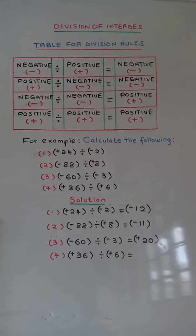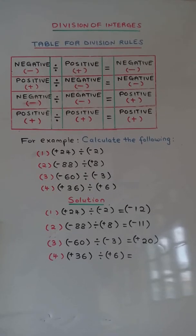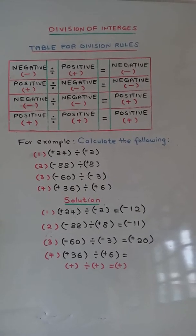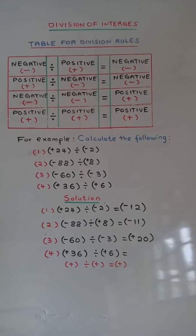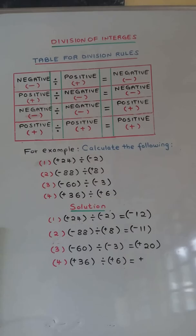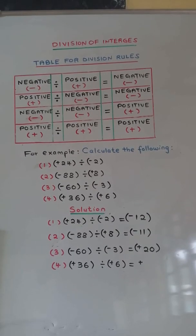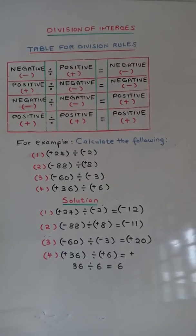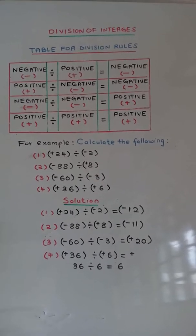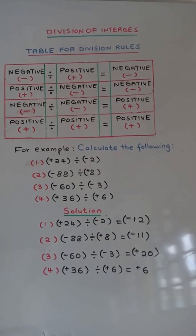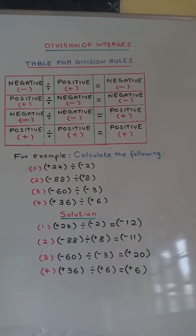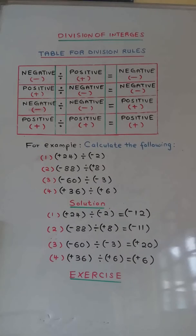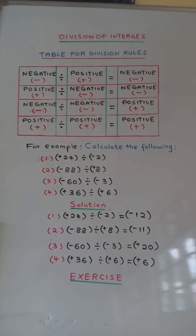Number 4: positive 36 divided by positive 6. Positive divided by positive is equal to positive. 36 divided by 6 is equal to 6, so the answer is positive 6. Exercise.